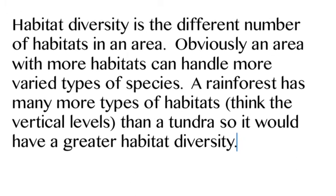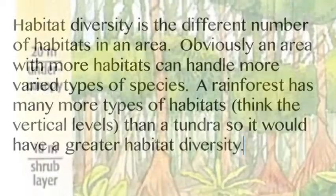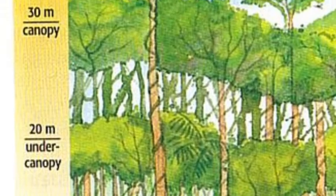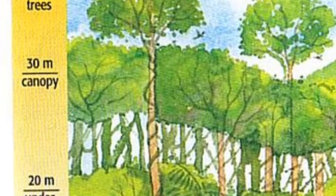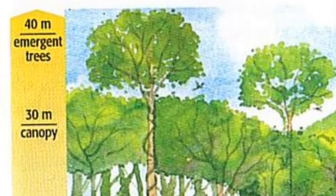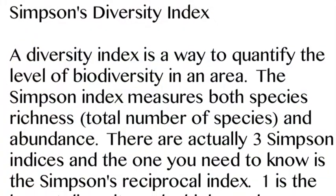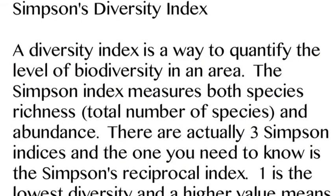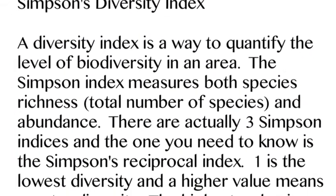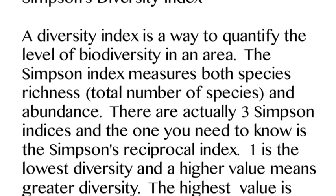Habitat diversity is the last of our three types — it's simply how many different kinds of habitats exist in an area. A rainforest has the most because it has vertical layers, each containing its own habitat. Each habitat supports more species diversity, and each species has more genetic diversity, so rainforests have crazy biodiversity.